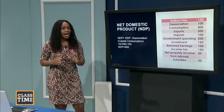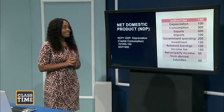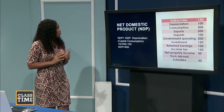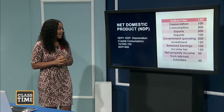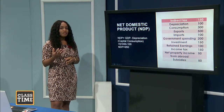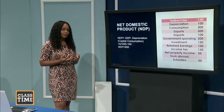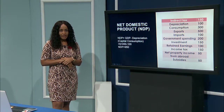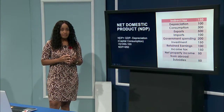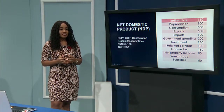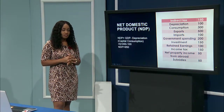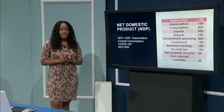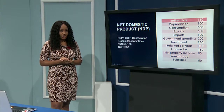Net Domestic Product, or NDP, looks at GDP minus capital consumption or depreciation. Since GDP at market price was $1,050 and capital consumption is $100, NDP equals $950.